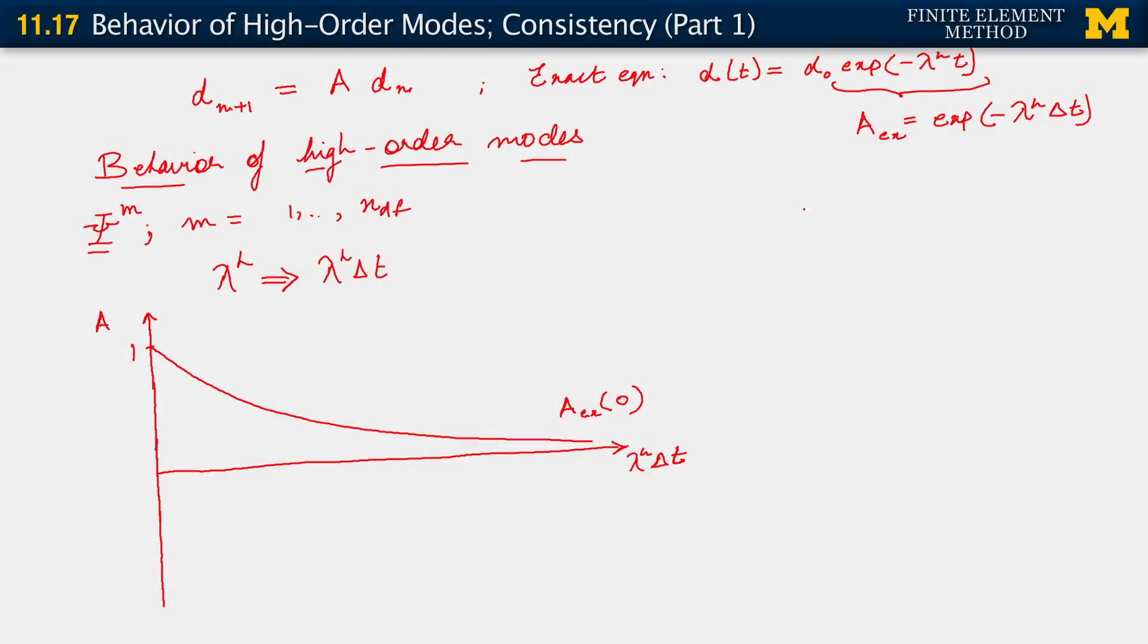Now we're going to return to our actual amplification factor, our algorithmic amplification factor, and look at what value it takes in the limit for the different members of our family. So since I have all this room here, I'm going to make use of it. And I'm going to write the actual amplification factor here. And recall that it is 1 minus 1 minus alpha delta t lambda h divided by 1 plus alpha delta t lambda h.